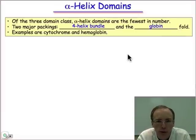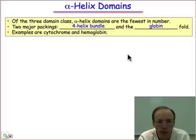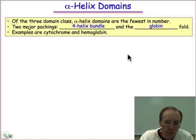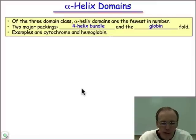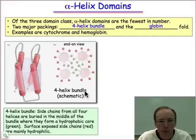In this webcast we're going to look at protein domains consisting only of α-helices. These are relatively few in number and there are just two types of packing modes. One is known as the 4-helix bundle and the second is known as the Globin domain. Let's take a look at a schematic cartoon diagram of the 4-helix bundle, which is found in proteins like cytochrome C.